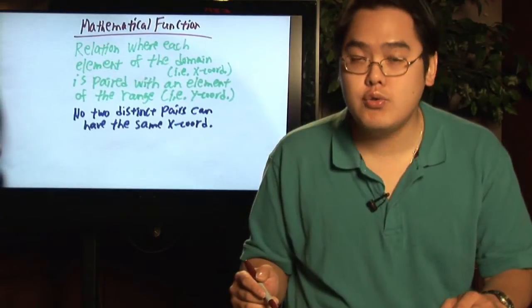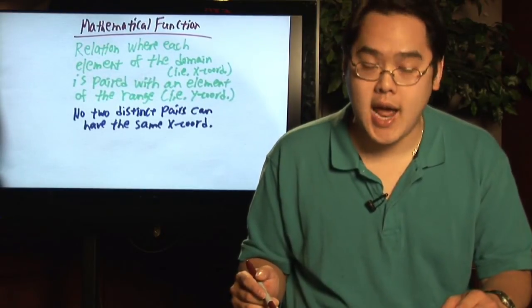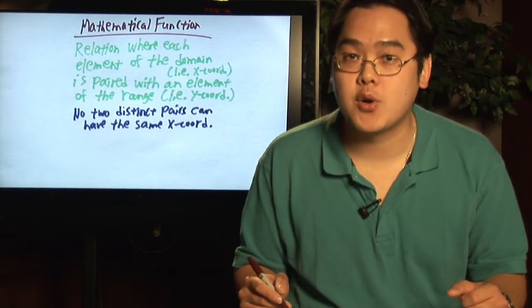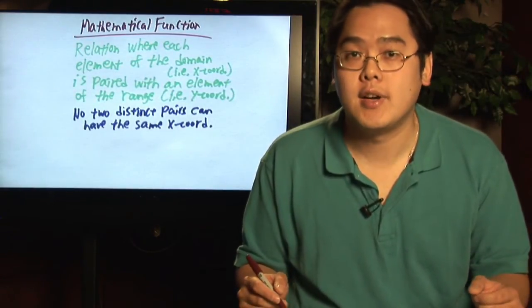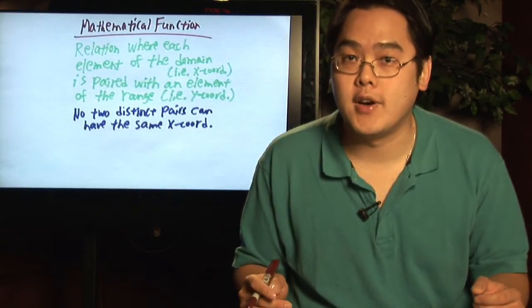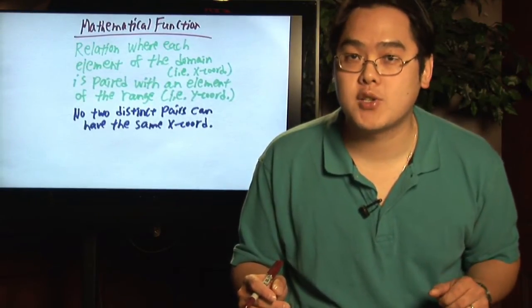No two distinct pairs can have the same x-coordinate. In other words, you cannot have two pairs sharing the same x-coordinates. So for example, you cannot have a pair of one, two and one, three in a function. They cannot share the same x-coordinate.